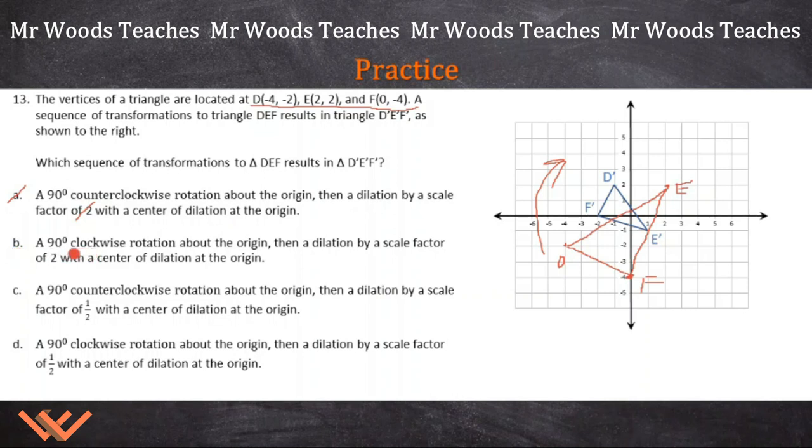B, a clockwise rotation. Oh, so there we go. About the origin, then a dilation by a scale factor of two. Can't be that. It just cannot because again, this is smaller. C, a 90 degree counterclockwise. Remember counterclockwise is like this. This is counterclockwise, and this is clockwise. So therefore, this is definitely not it. However, it has this fraction here. And then when I say no to that one, a 90 degrees clockwise rotation about the origin. It's definitely clockwise. Then a dilation by a scale factor of one half with a center of the dilation at the origin. That's our answer. That's the only one.